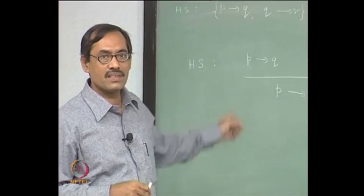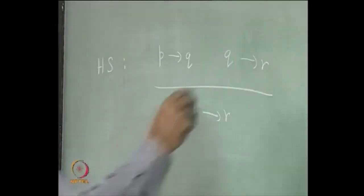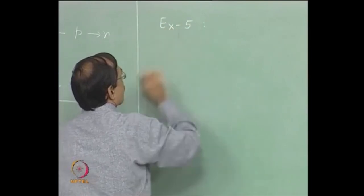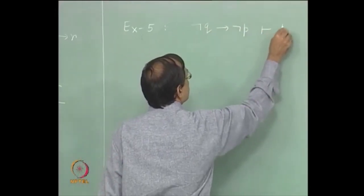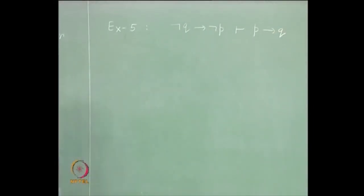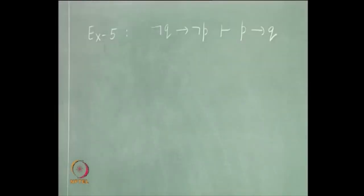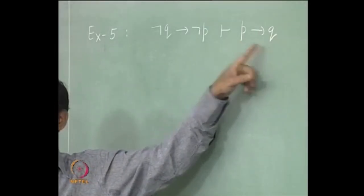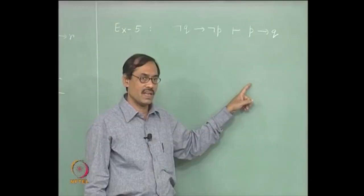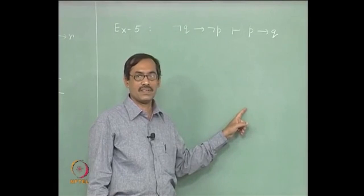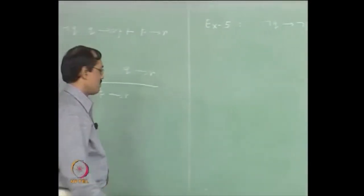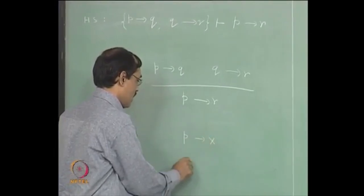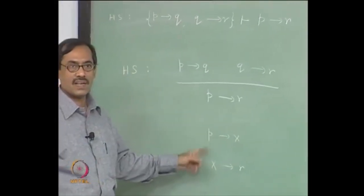Let us try to prove something using HS as a derived inference rule. Suppose we give: not q implies not p, entails p implies q. Let us try a proof of this using HS. If HS is used, that means before the conclusion step, we would obtain p implies x and then x implies q. We use HS and conclude p implies q. Now, the question is what could this x be?